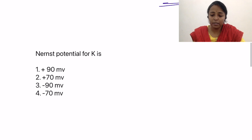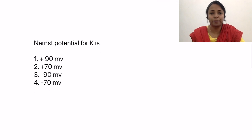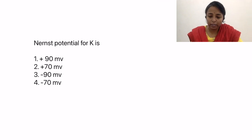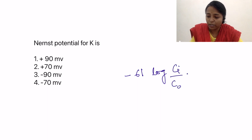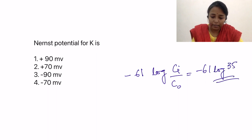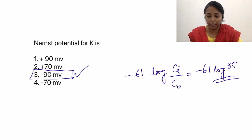The next question: what is the Nernst potential for potassium under physiological conditions? Again, you put minus 61 log concentration inside divided by concentration outside, which comes to minus 61 log 35. The answer is minus 90 millivolts. So the Nernst potential for potassium is minus 90 millivolts.